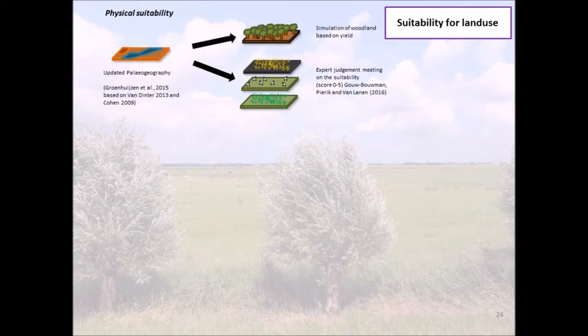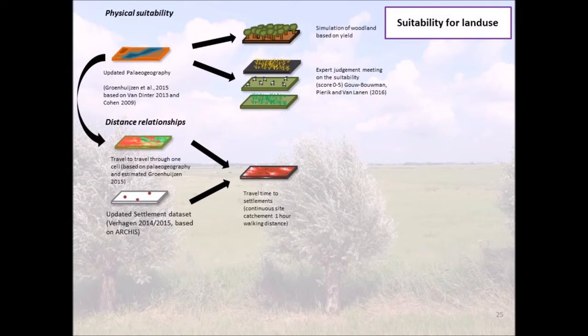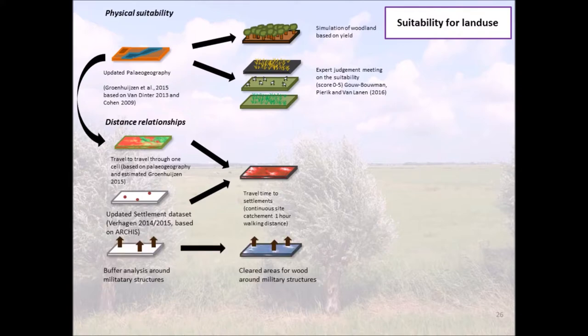We gave areas really suitable for arable farming a score of five, less suitable areas a score of three or two, and completely unsuitable areas a score of zero. We did that for arable farming, pasture, and meadow. Another component to determine suitability for land use are distance relationships. We made a friction model based on a friction model proposed by Mark Groenhuijsen. Combined with settlement data, we had site catchment areas of one or two hours' walking distance around settlements, applied to the different land use types.